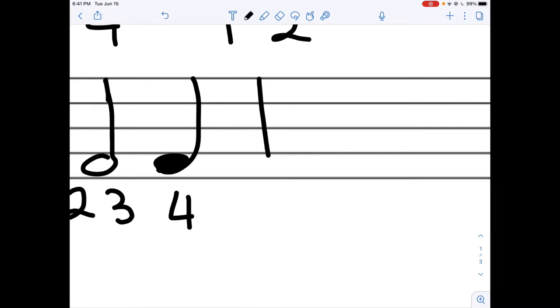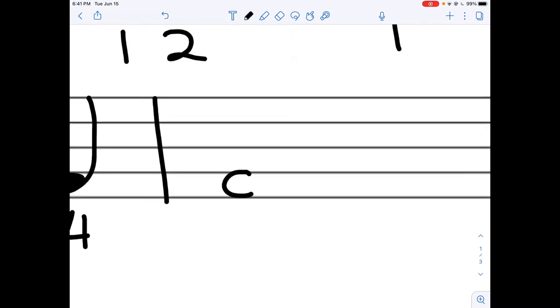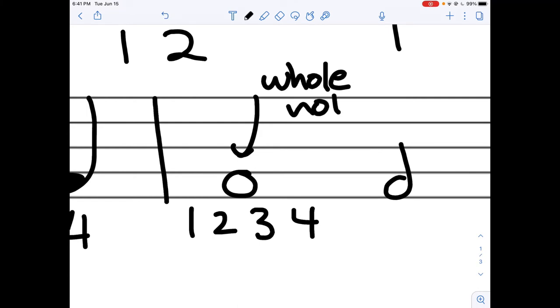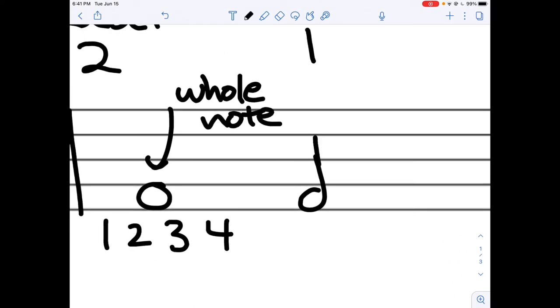Let's try another example. So this would be one, two, three, four. Why is this four? Because it's a whole note. Next, this is a half note, so that's two counts. So five, six.